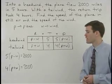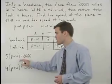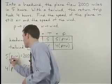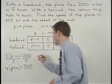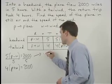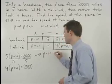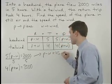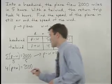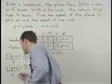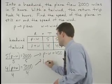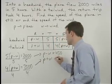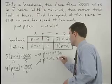As our next step, I would divide both sides of the top equation by five to get p minus w equals 400 and divide both sides of the bottom equation by four to get p plus w equals 500.